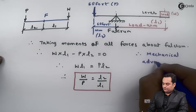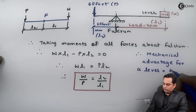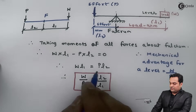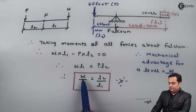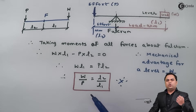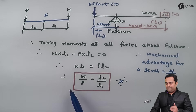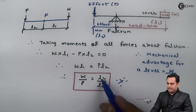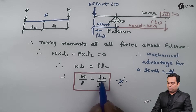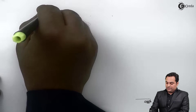This relation — load upon effort — is called the mechanical advantage. Therefore, mechanical advantage for a lever equals load divided by effort, which also equals L2 divided by L1. A higher mechanical advantage means either more load is lifted or less effort is applied. It also helps calculate the lengths of the effort arm and load arm.